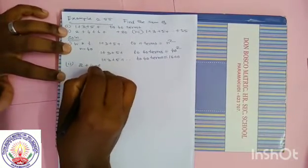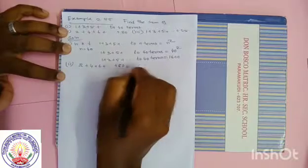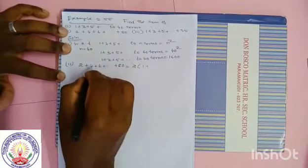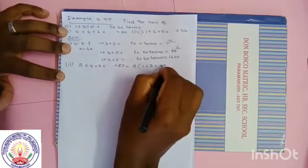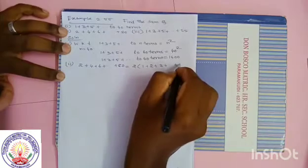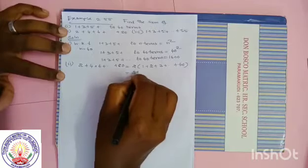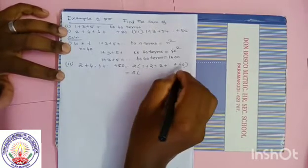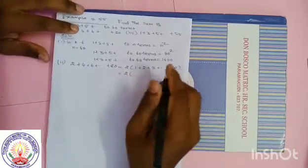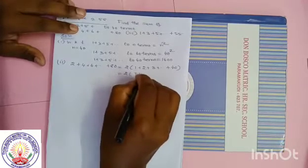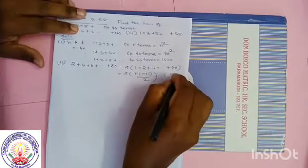2 plus 4 plus 6 plus dot dot dot plus 80. We take 2 outside from all terms: 2 into (1 plus 2 plus 3 plus dot dot dot plus 40). Now look at this — it is the sum of first 40 natural numbers. The formula is n into (n plus 1) by 2. So we can write 2 into 40 into 41 by 2, where n is equal to 40.